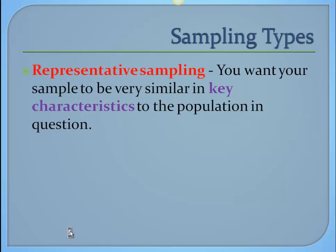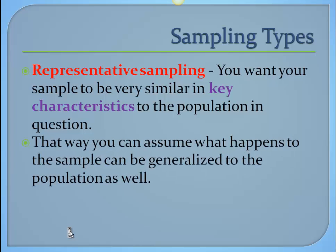We're going to talk about three or four sampling types, so stay focused and make sure you can describe each one. We want a representative sample if possible. A representative sample means that your sample is very similar and characteristic to the population — our subset, our sample, kind of represents the population fairly accurately. That way you can assume that if something happens to the sample in your study and their behavior changes, since they were really like the population in key ways, you'd likely get similar results if you applied the same IV manipulation to the whole population.